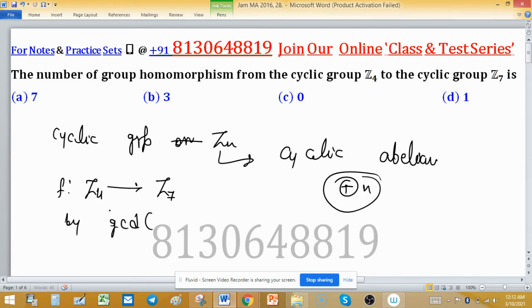If this is m or n, then we can in general find the number of group homomorphisms by GCD of m, n. This will give you the number of group homomorphisms. This question particularly asks about Z4 to Z7.